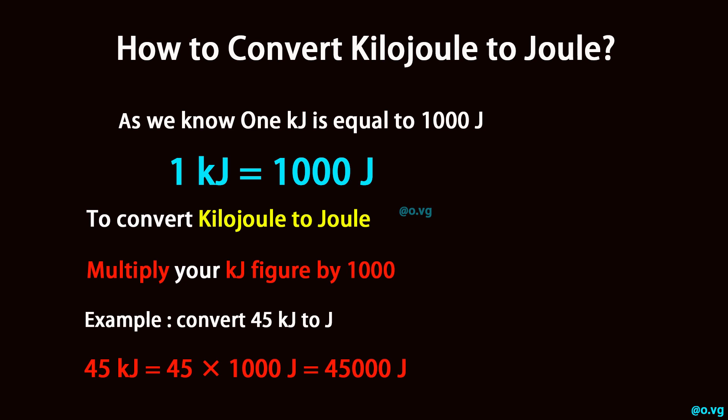Example: convert 45 kilojoule to joule. 45 kilojoule is equal to 45 times 1,000 joule, which equals 45,000 joule.